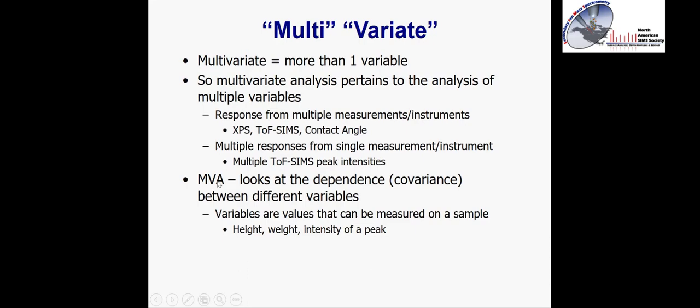Most multivariate analysis methods look at the dependence or covariance between different variables, trying to determine what variables are changing together and how they are related. In the case of SIMS and SIMS imaging, where are those peaks located? The variable can be anything you can measure, and for SIMS data it's usually the intensity of a peak that we're feeding into the data algorithms.